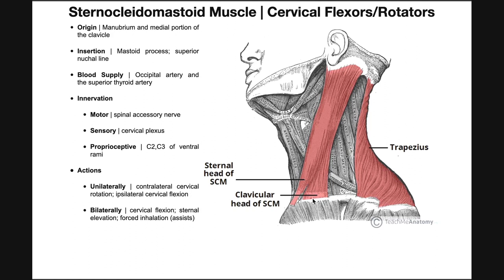Once these two heads ascend, you can see pretty quickly they fuse together and then travel as one large belly superiorly, where they're then going to insert mainly on the mastoid process. The mastoid process you can actually palpate pretty easily — just take a finger and put it right behind your ear; there's a bump right there, and that bump is the mastoid process. That's the primary insertion of sternocleidomastoid. There's also a small portion of the muscle that inserts on the superior nuchal line, going around the occiput.